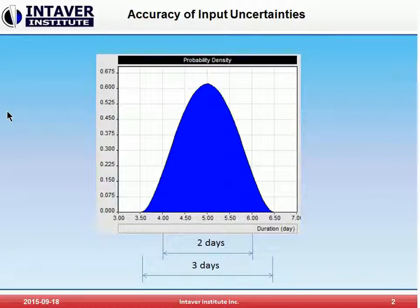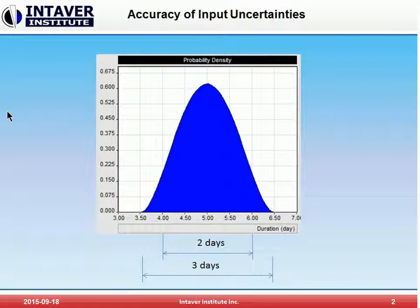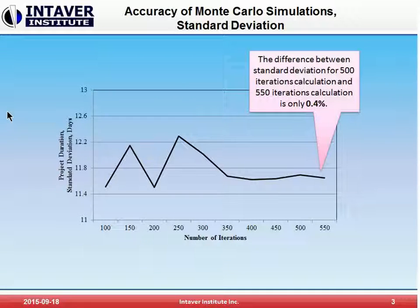No one would visit our website or read our books. So given that there is a lot of inherent imprecision in our estimates, does it make any sense to run thousands of iterations? Let's take a look at how much accuracy additional Monte Carlo simulations would add.